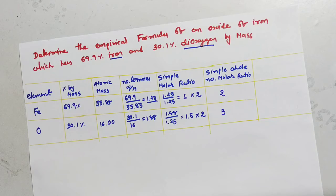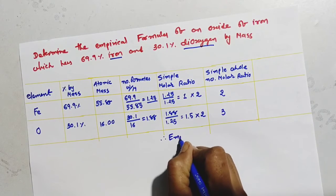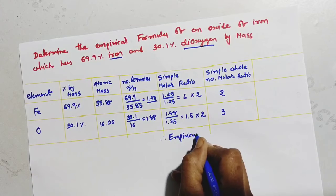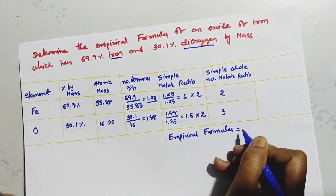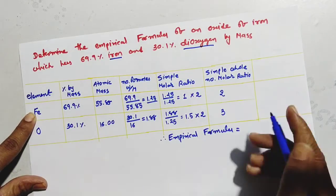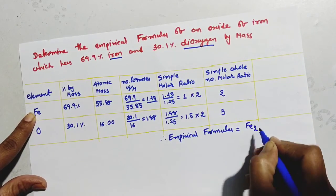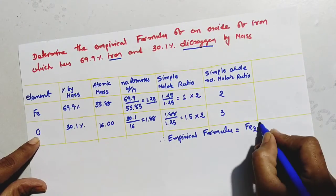So, which is our empirical formula? Empirical formula equal to Fe. How many Fe? 2. Fe2 and oxygen is 3, O3. This is our empirical formula.